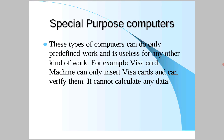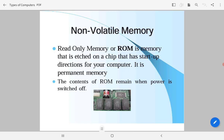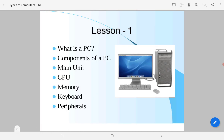Special purpose computers can do only predefined work and are useless for any other kind of work. For example, a visa card machine can only swipe and verify cards and cannot calculate any other data. ATM machines are special purpose computers - internally they insert a card with magnetic material and perform only cash transactions. These machines are not designed for general calculations or other tasks.